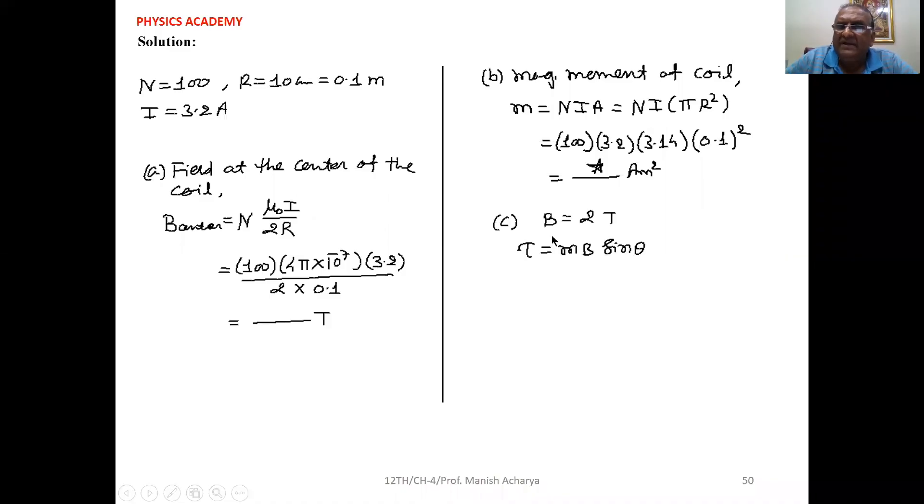Now the magnetic field given to you is 2 tesla. When any current carrying coil is placed in the magnetic field, the torque acts on it and that is τ = MB sin θ magnitude-wise.